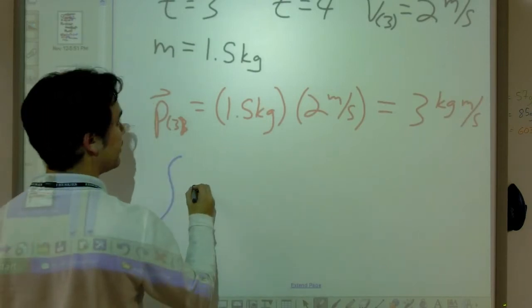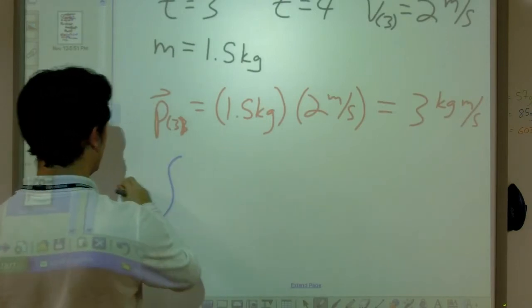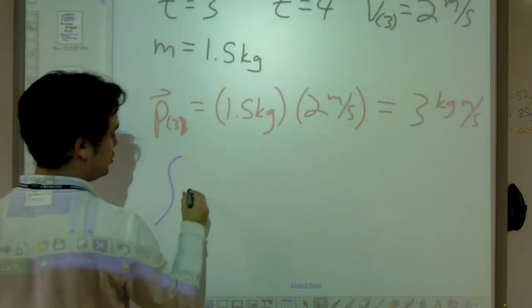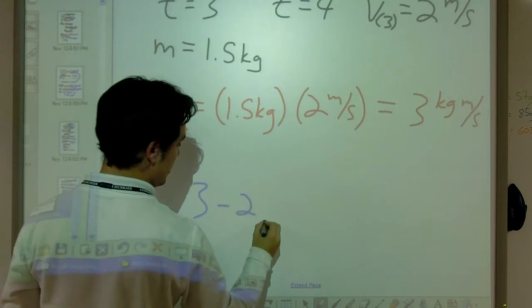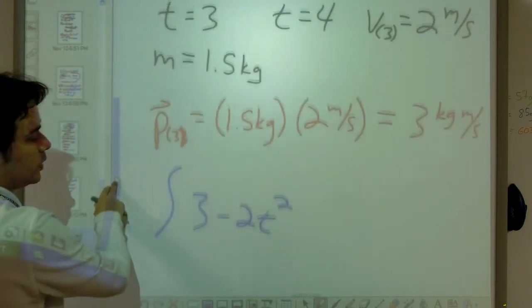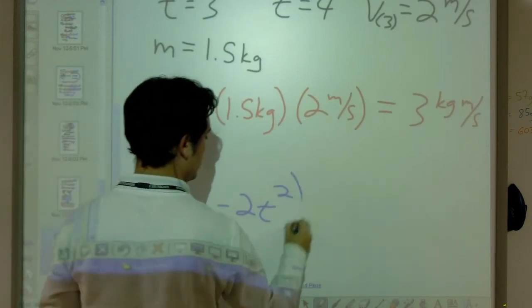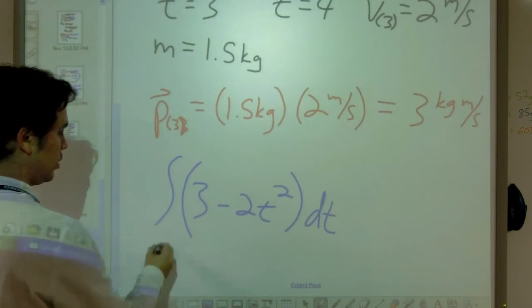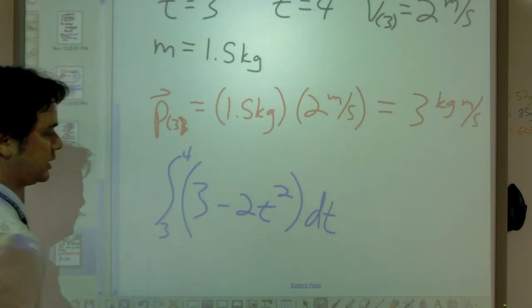So I'm going to go ahead and set that up. We've got integral of F, where my force was three newtons, so three minus two t squared dt.